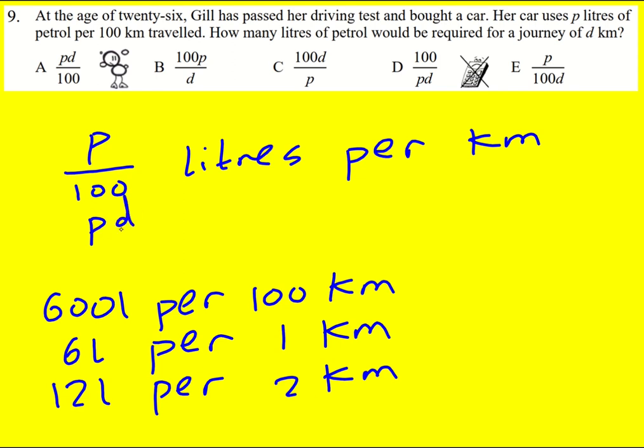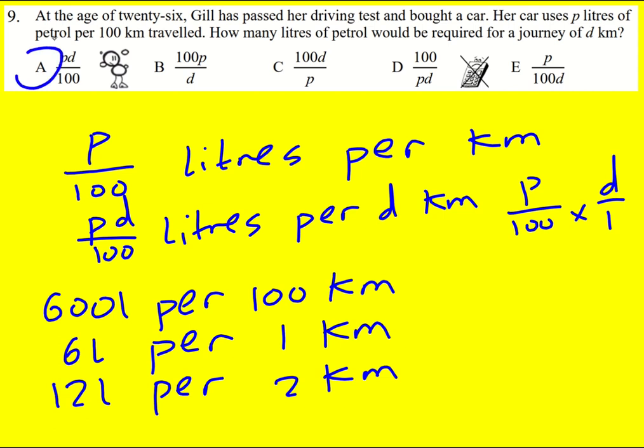p, and then we times just the top by d. You can imagine it being p over 100 times d over 1, but that's going to give pd over 100. So pd liters per d kilometer, which is the same as how much we need for a journey of distance d. Just got to find it in the answers. There it is.